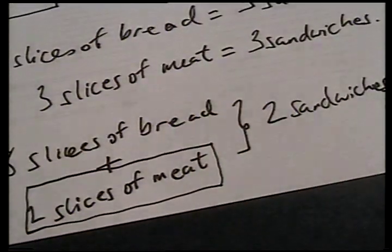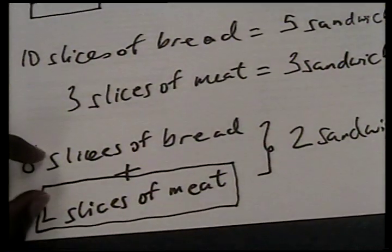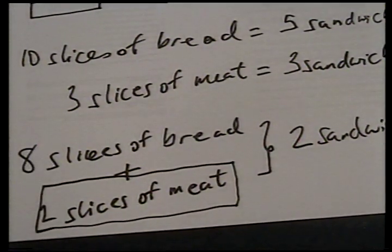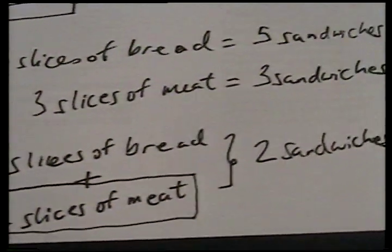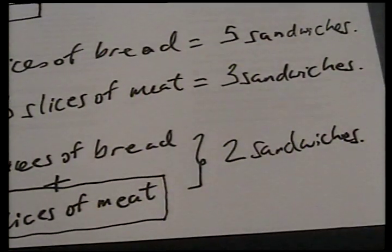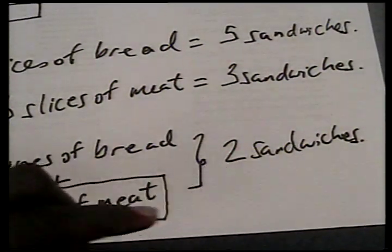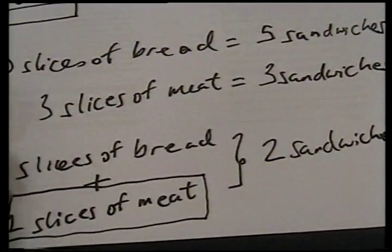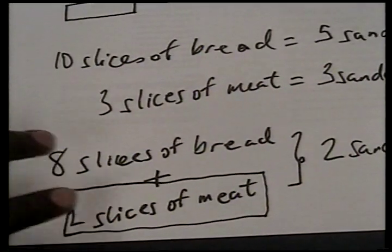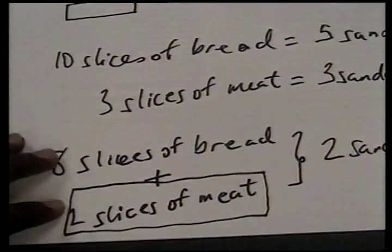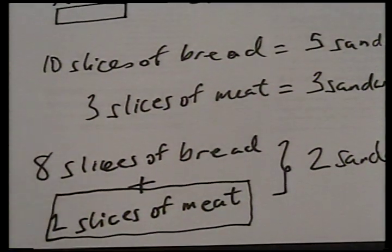Essentially, in a limiting reagent problem, you're given two amounts of reactants and we're expected to find one of the products. Sometimes they might even ask you to find which of your reactants is in excess. So, let's go in and do a real life problem which I'll put on the screen and then we'll dive into the problem.